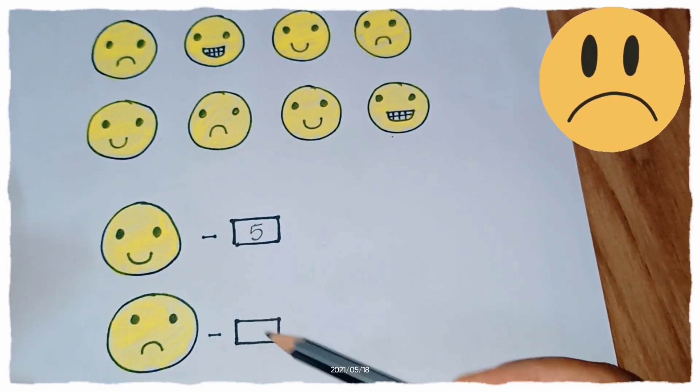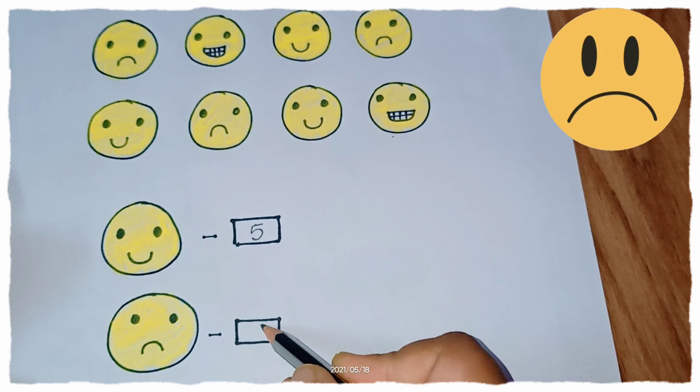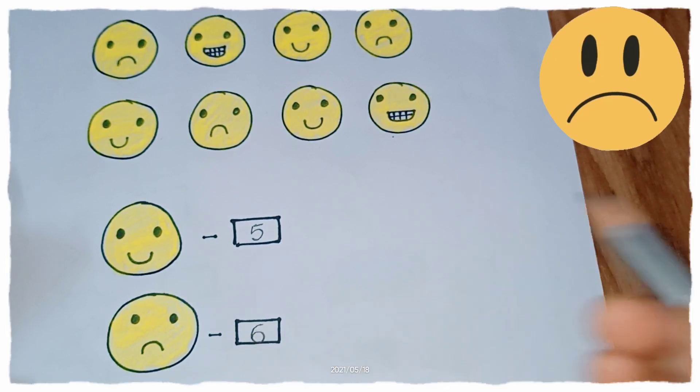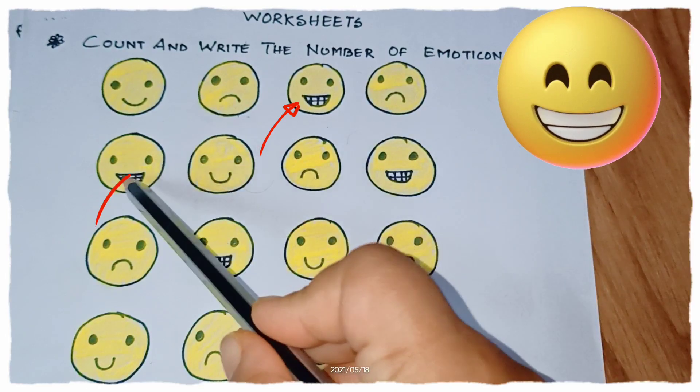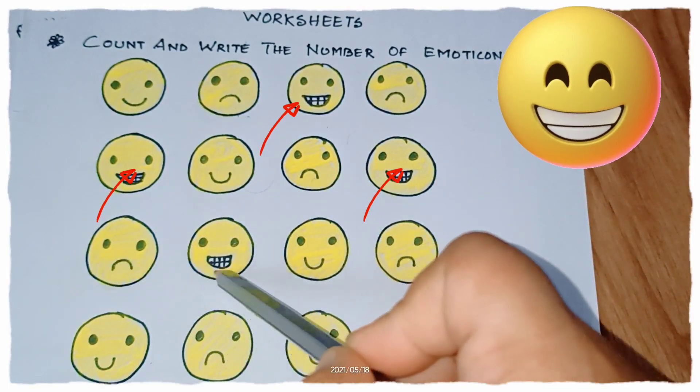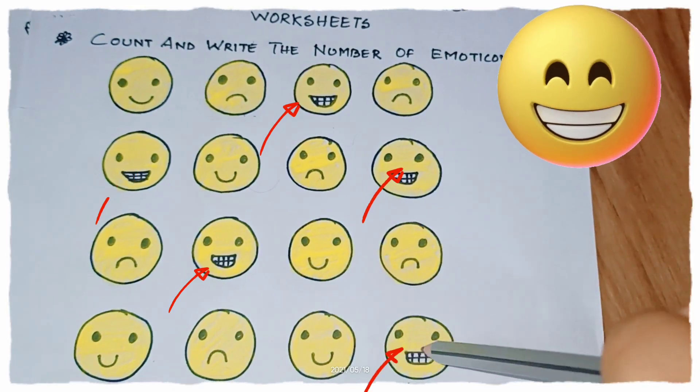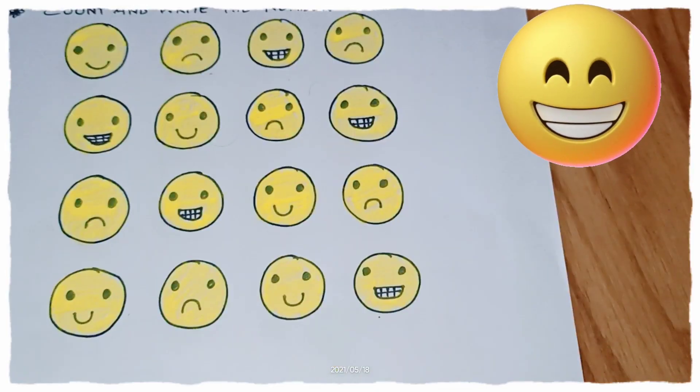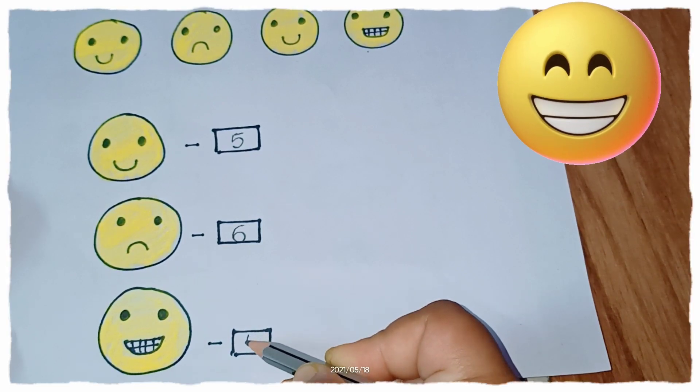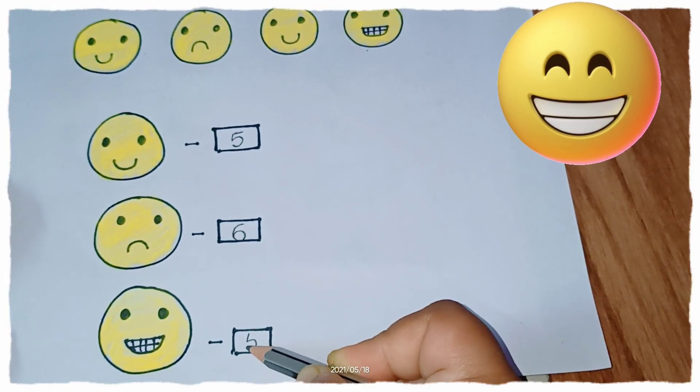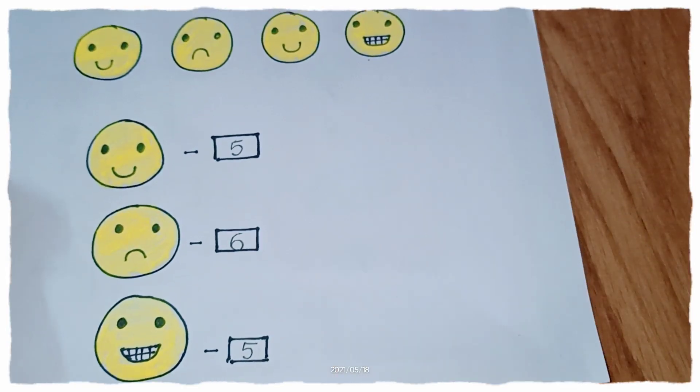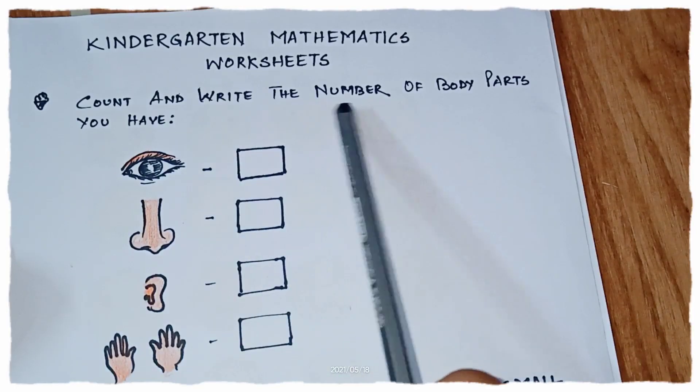So let's see how many sad faces: 1, 2, 3, 4, 5, 6. So we have 6 sad faces. Now we will write here 6. Let's find those happy grinning faces: 1, 2, 3, 4, 5. So happy laughing faces, we will write here 5.